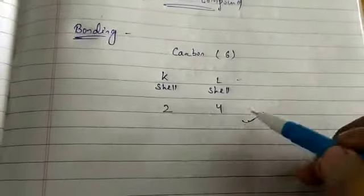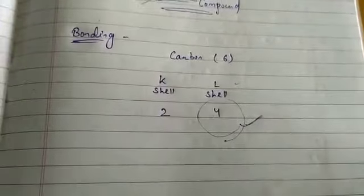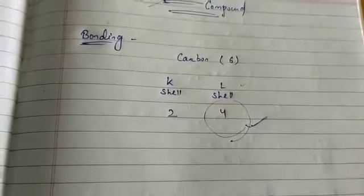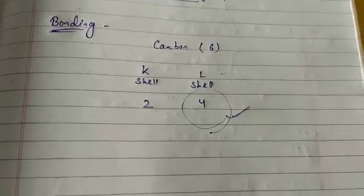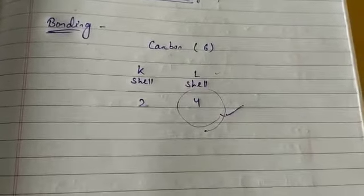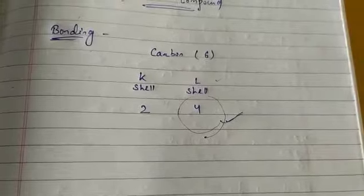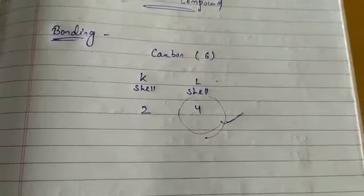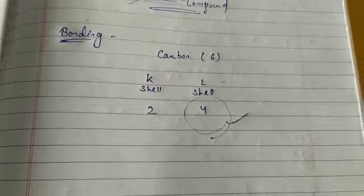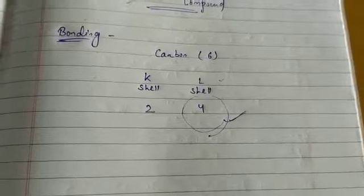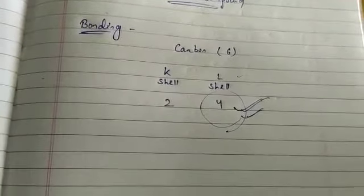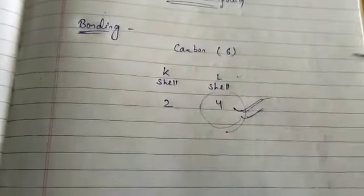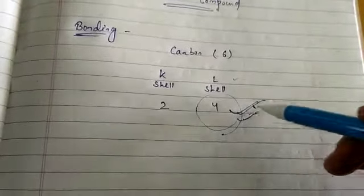The reactivity of an element is explained by its tendency to attain a completely filled outer shell, that is to attain a noble gas configuration — meaning their outer shell should have 8 electrons. This is also known as the octet rule. Elements forming ionic compounds achieve this by gaining or losing electrons from the outermost shell. But in the case of carbon, it has 4 electrons in the outermost shell and needs to gain or lose 4 electrons to gain noble gas configuration.